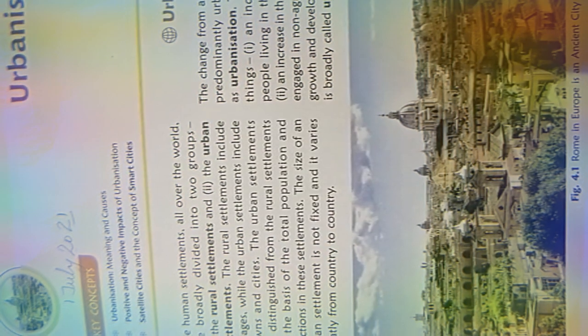Next chapter, 4th chapter, its name is Urbanization. So in this chapter we have to discuss about urbanization, its meaning, causes, what are the positive and the negative impacts of the urbanization, and satellite cities and the concept of the smart cities. So these topics we have to discuss in chapter number 4, Urbanization.